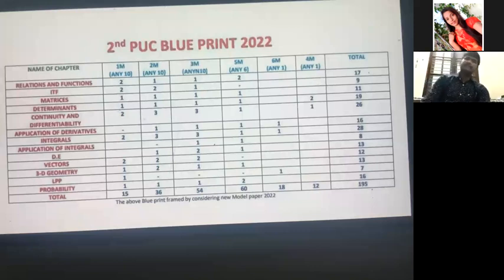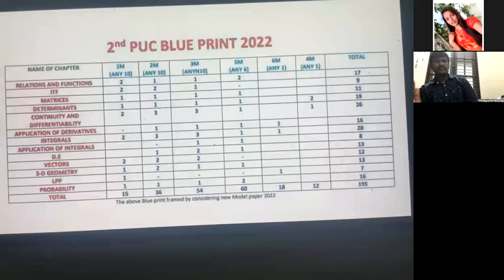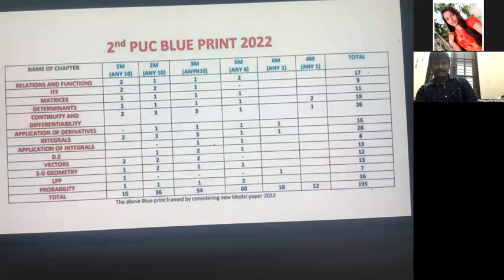Dear students, this is about the second PSC blueprint 2022. In the extra 10 to 15 minutes, you can concentrate on the complete inputs — how to score 100 marks, 90 marks, 80 marks, how to write with choice including choice, and how to save your time. Please concentrate for the next 10 minutes.